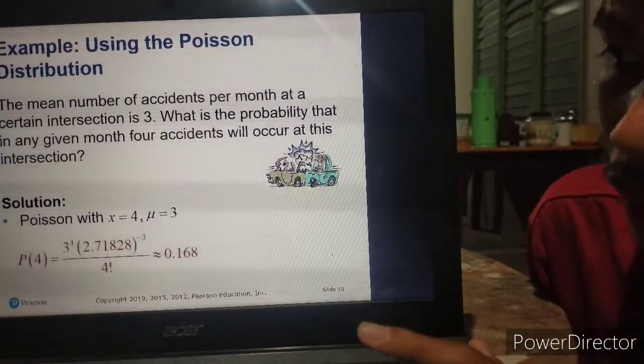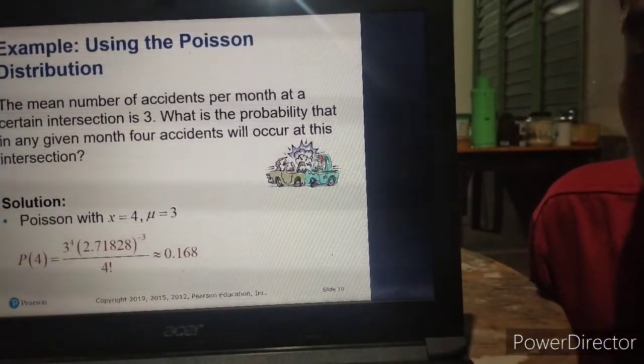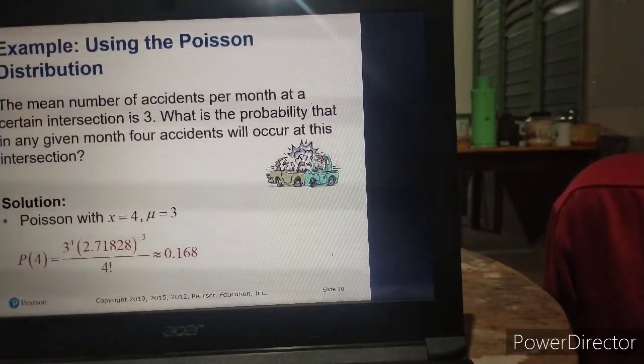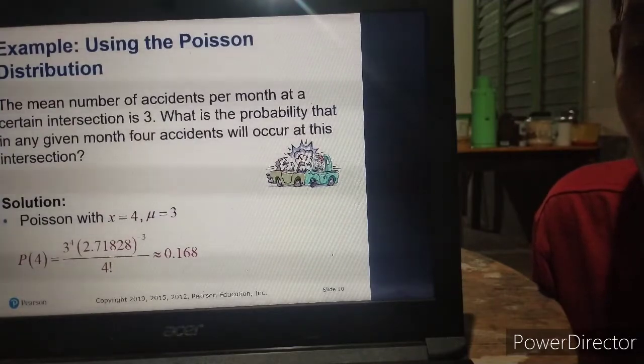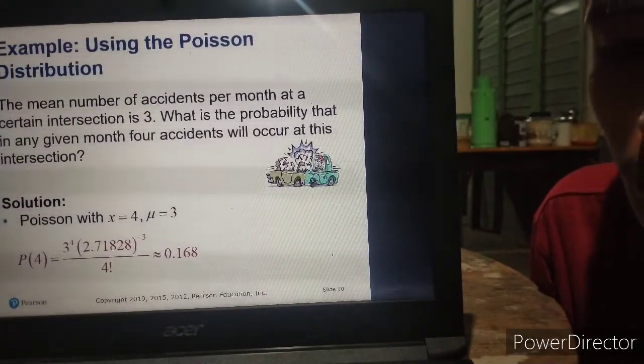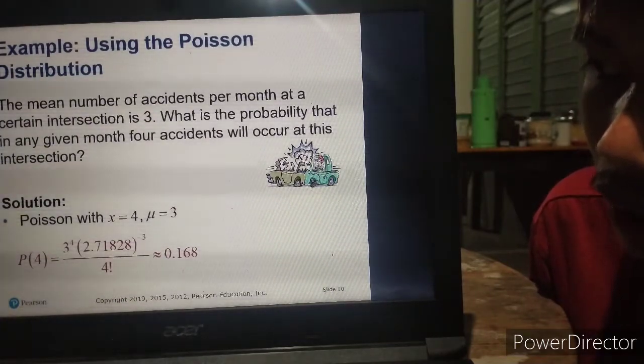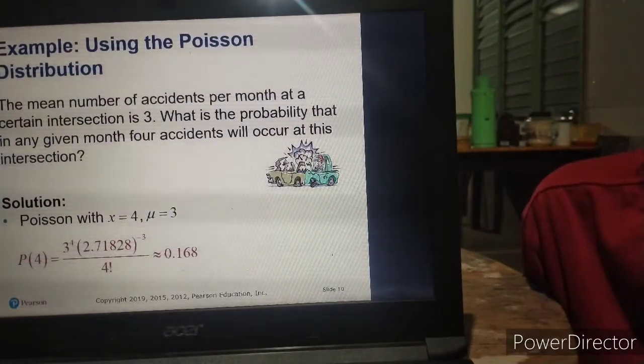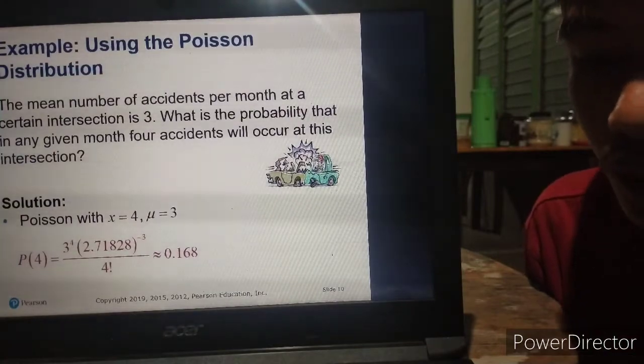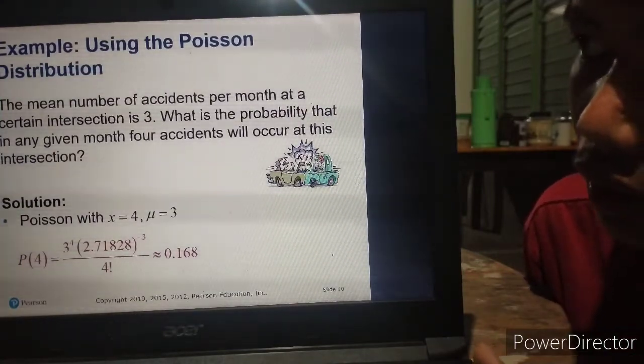We have probability of 4 accidents equals 3 raised to 4 times Euler's number 2.71828 raised to negative 3 over 4 factorial. It is approximately 0.168.